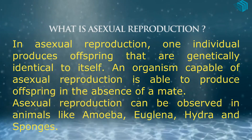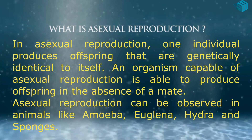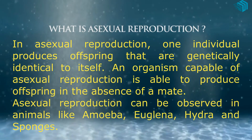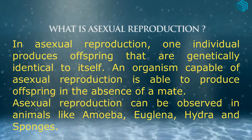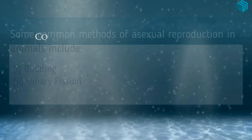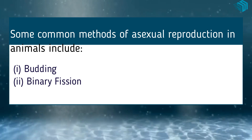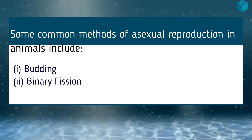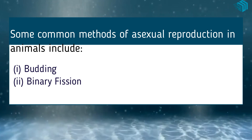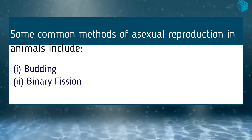Asexual reproduction can be observed in animals like amoeba, euglena, hydra, and sponges. Some common methods of asexual reproduction in animals include budding and binary fission.